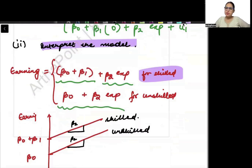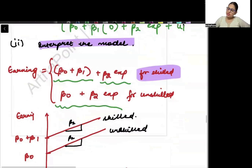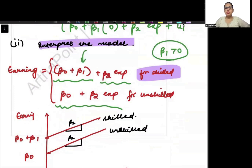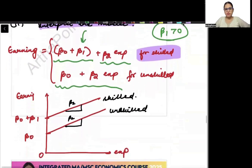Clearly we expect a skilled worker to get more salary than an unskilled worker, so we can say that beta 1 will be greater than 0 — it should be positive.